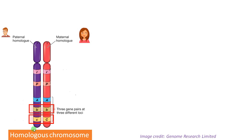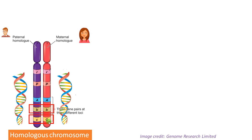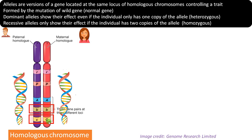Sometimes the alleles may be different, as in the case of capital C and small c. These are different alleles, and if the alleles are different, it is called heterozygous. That means there is a difference in the nucleotide sequence of small c and capital C. That is why we call alleles different versions of the same gene. Alleles are located on the same locus of homologous chromosomes and control the same trait — for example, capital C and small c both control hair color.